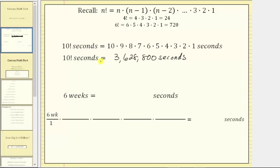To show that 10 factorial seconds equals six weeks, let's now convert six weeks to seconds to make sure we get six weeks equals 3,628,800 seconds. To perform the conversion, we will multiply six weeks by unit fractions to convert six weeks to seconds.